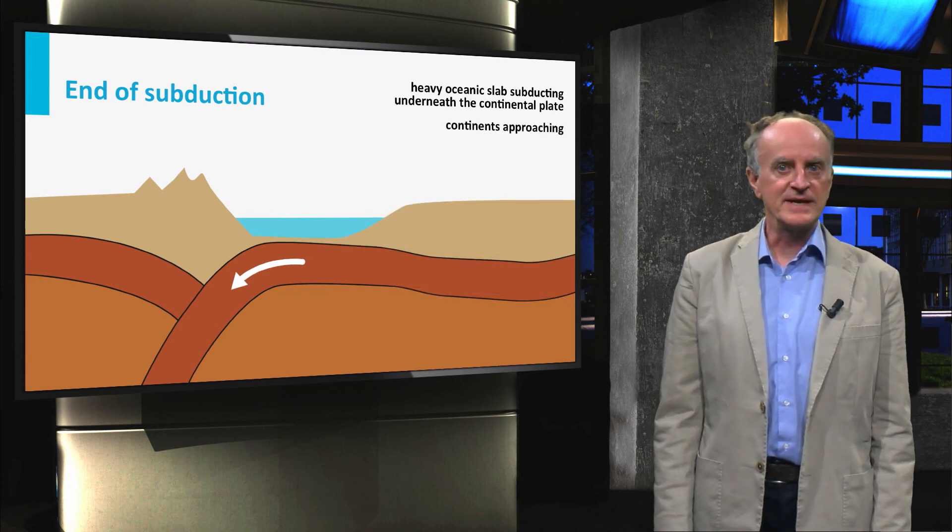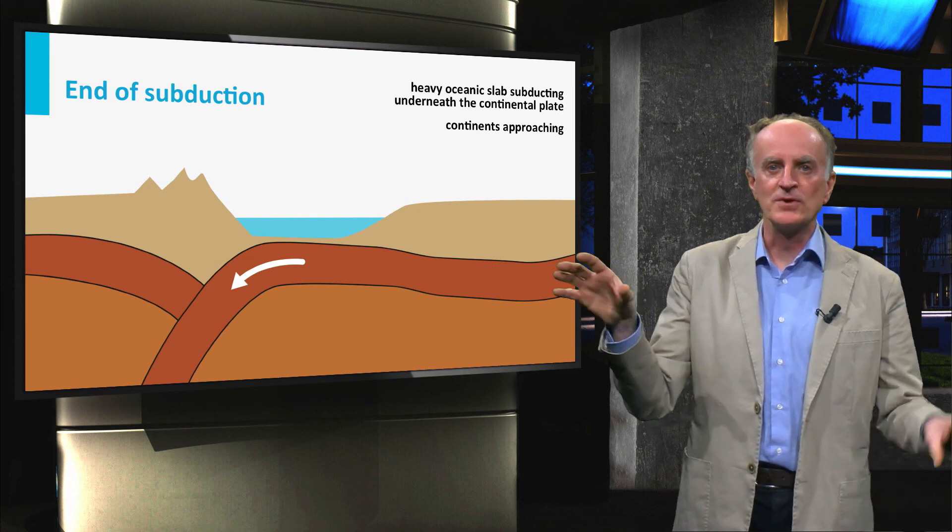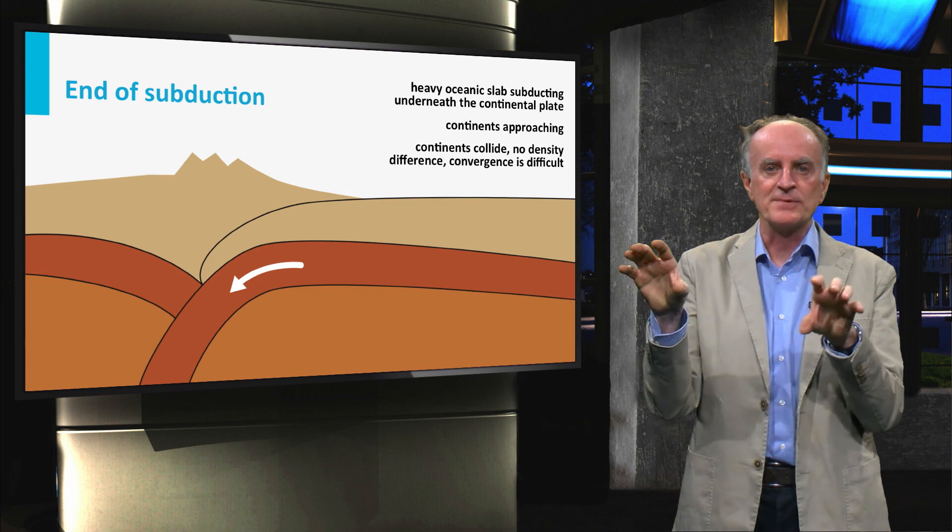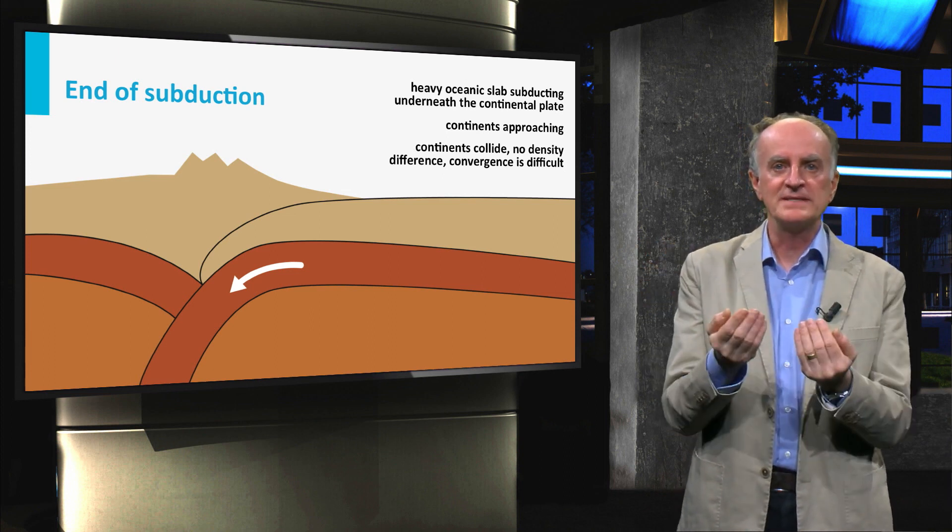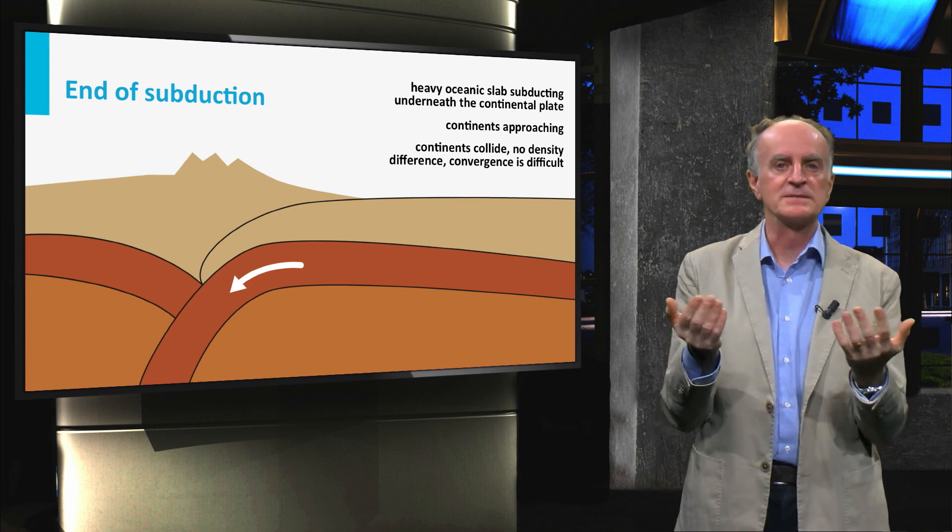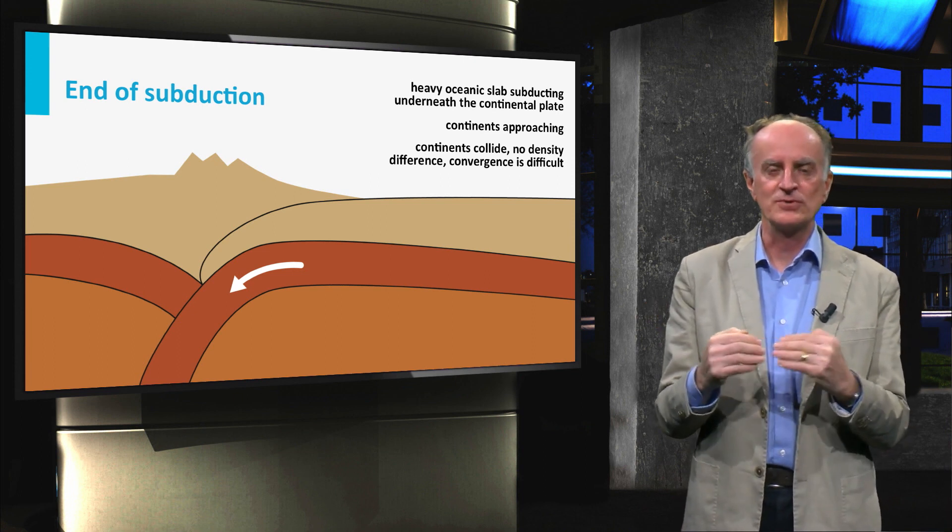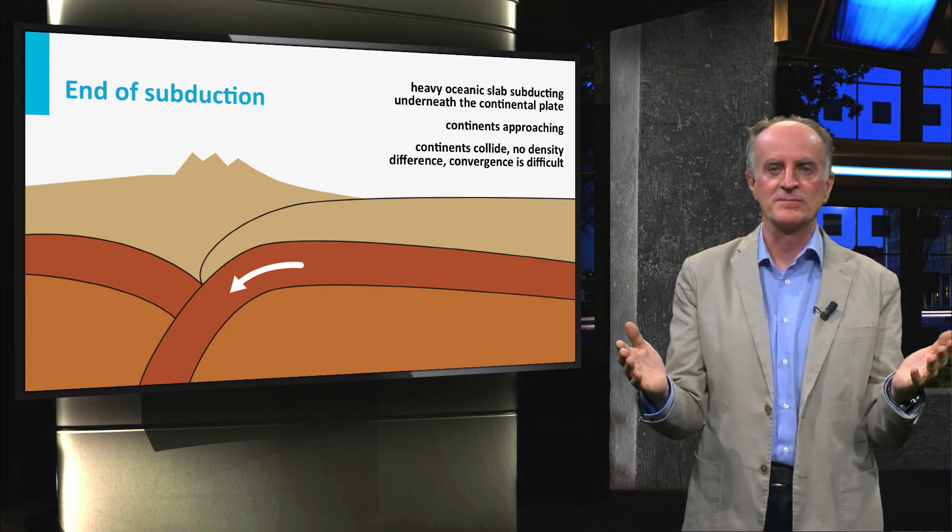In other cases, when the oceanic crust laterally passes to continental crust, the two continents approach each other. When the continental crust arrives into the subduction zone, the lower and the upper plates have similar densities, and smooth subduction becomes difficult. Continental collision occurs, leading to the formation of the large mountain belts of the world.